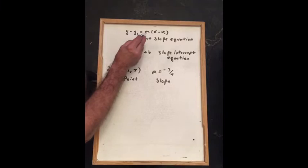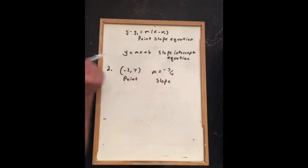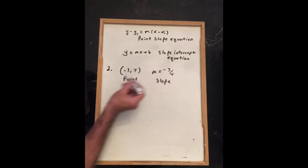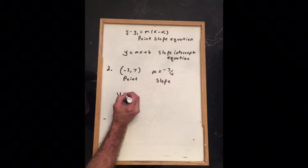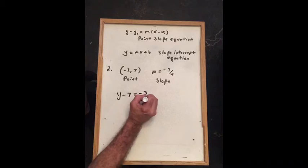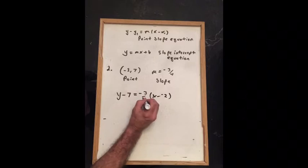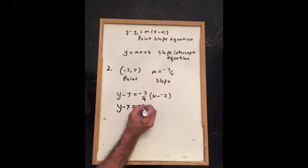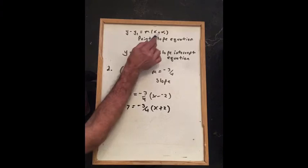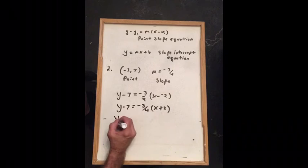For problem 2, we're going to use the point-slope equation y minus y1 equals m times x minus x1, and also the slope-intercept equation y equals mx plus b. We're given a point (−2, 7) and slope m equals −3/4. We start with the point-slope equation: y minus 7 equals negative 3 over 4 times x minus (−2), giving us x plus 2 because of the two negatives. Notice there's a minus sign in the formula and a minus in the point.